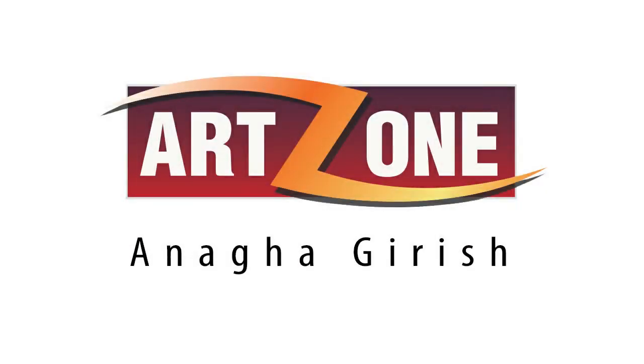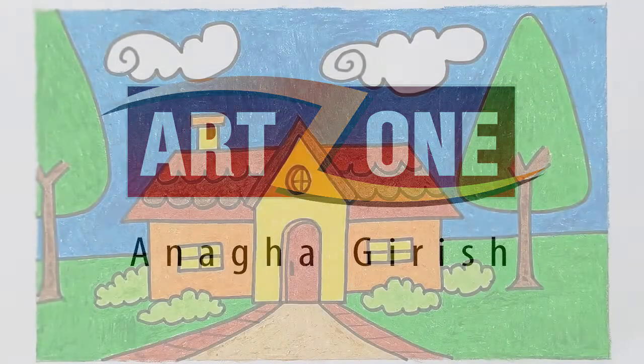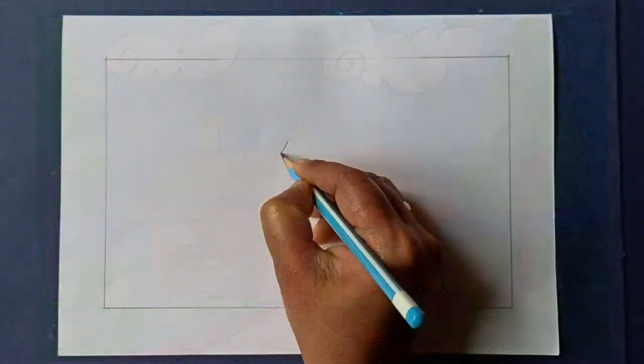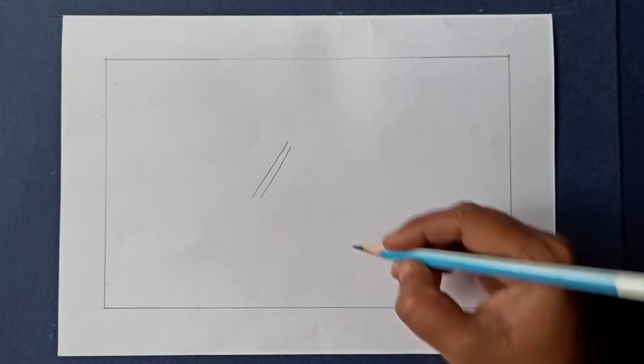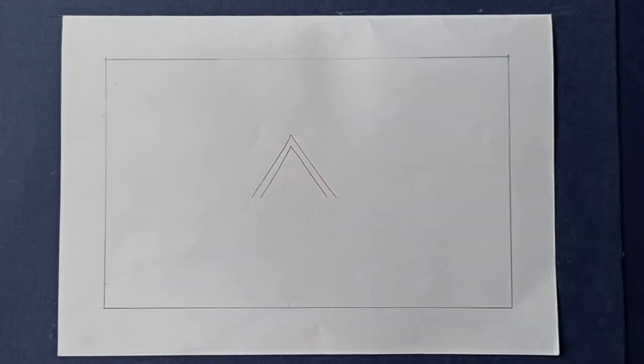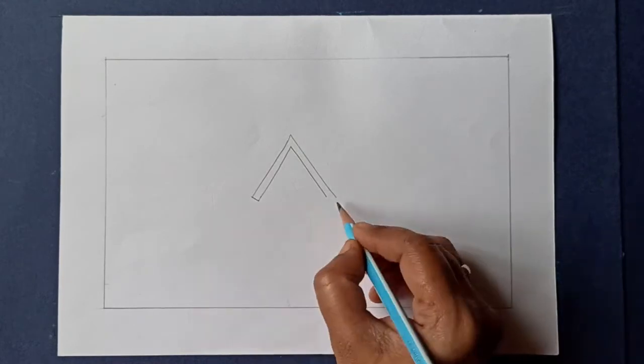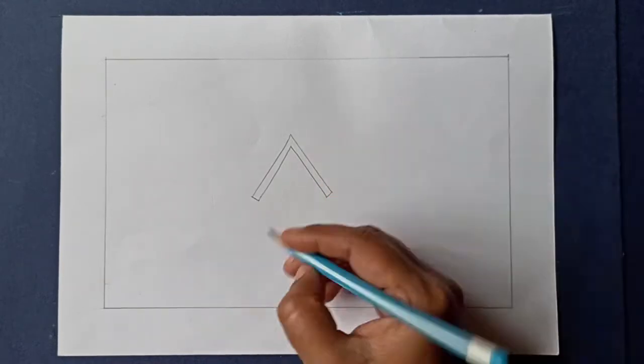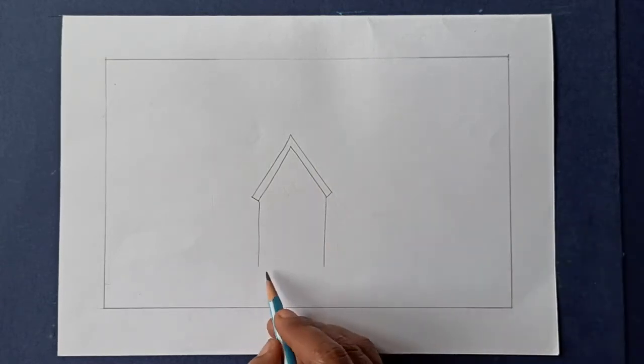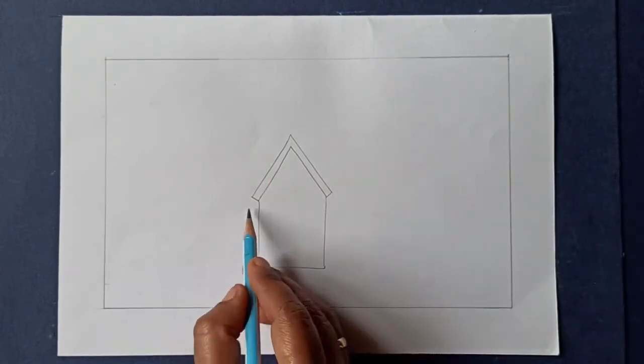Hello children, welcome to Art Zone. Let's draw a sweet home. Start the drawing with two slant lines. Repeat the same on the other side. Connect these lines with a small line. Draw two straight lines and connect them.